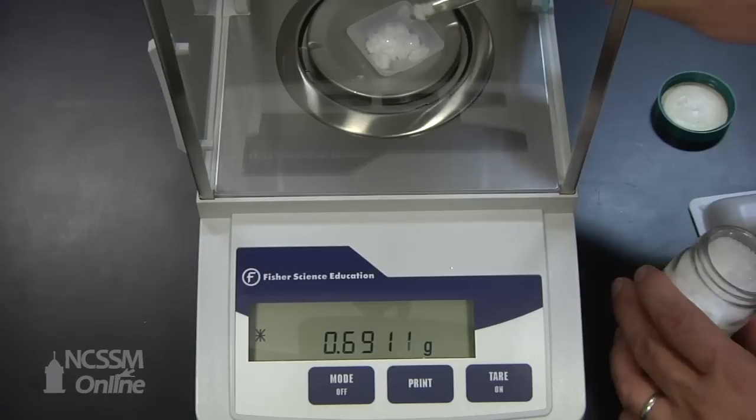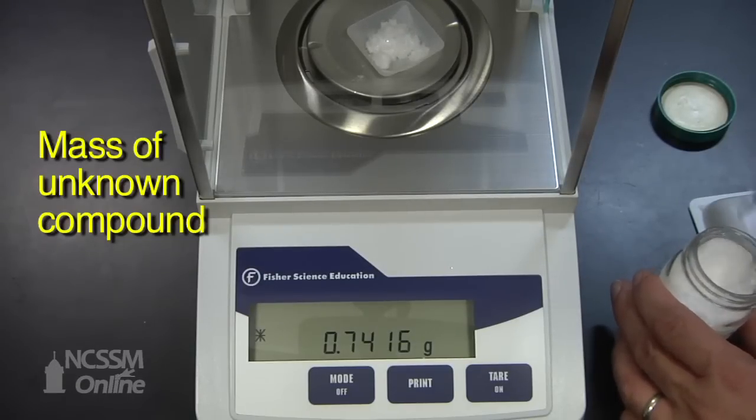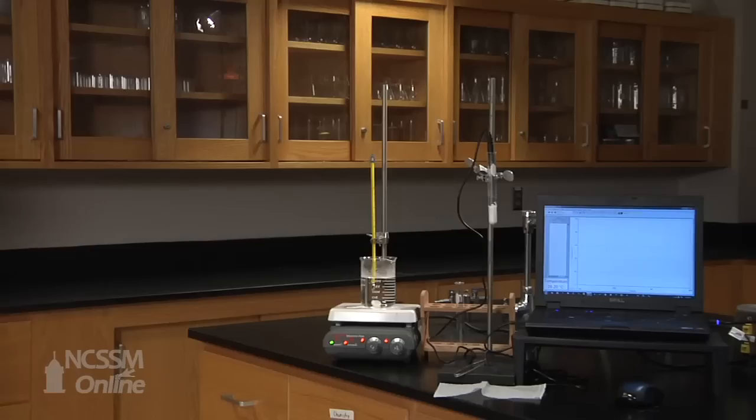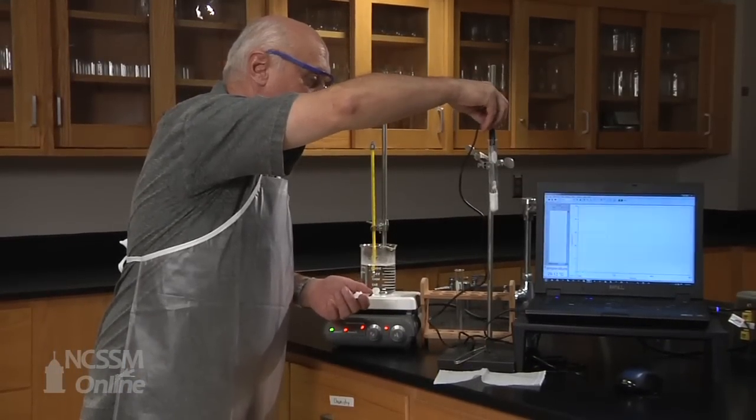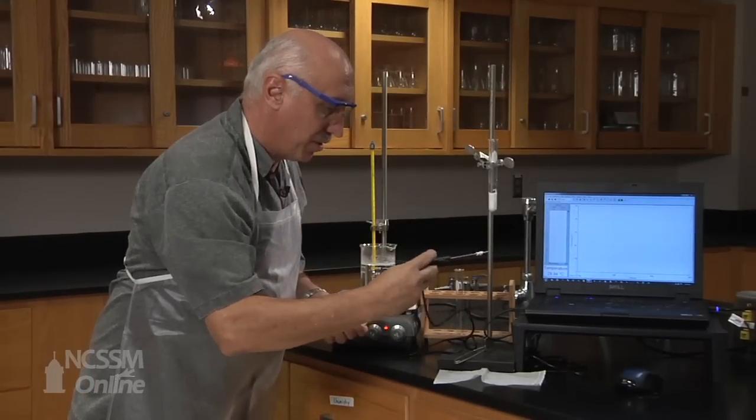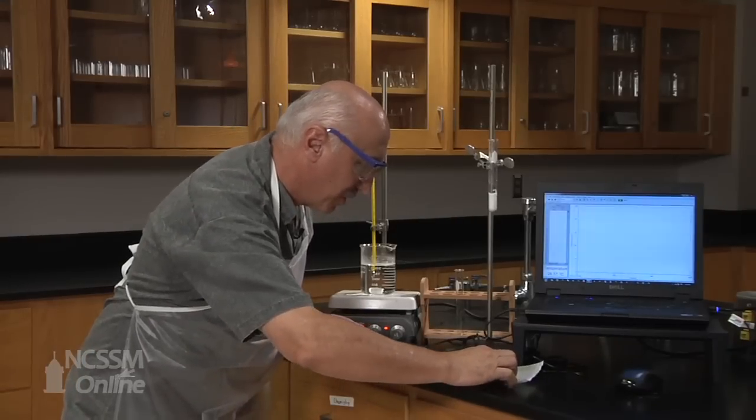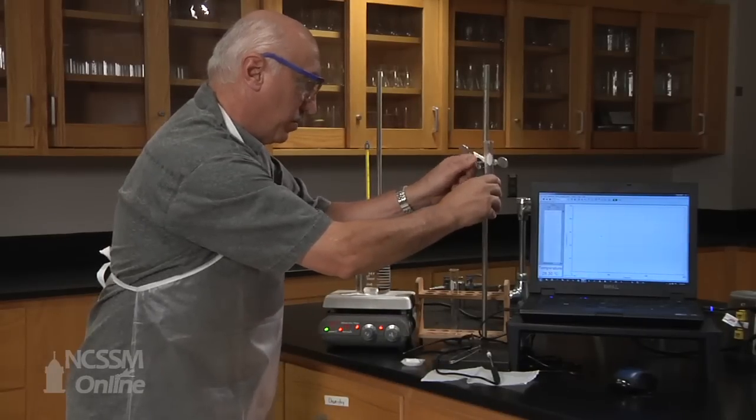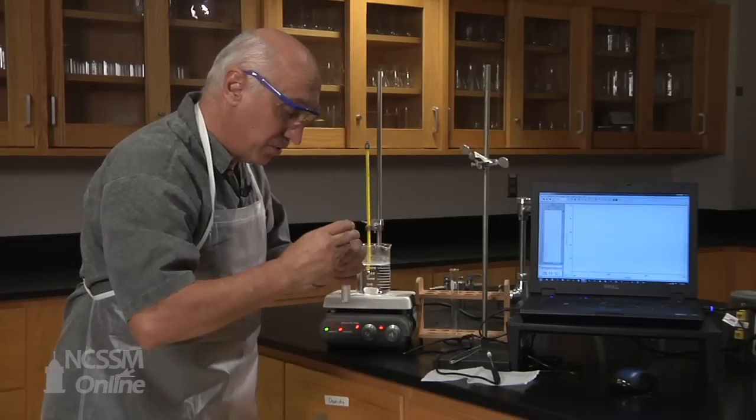Okay, so now we're going to add 0.75 grams of the unknown solute. And that's pretty close to 0.75. Okay, so now we're going to carefully remove the temperature probe. We'll set it up so we don't lose any of the lauric acid. Very gently. And we will take this test tube and add the unknown solute to it.